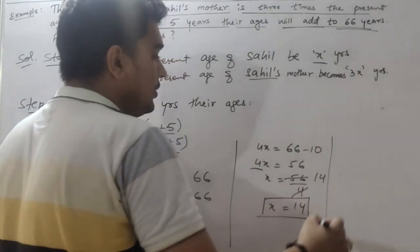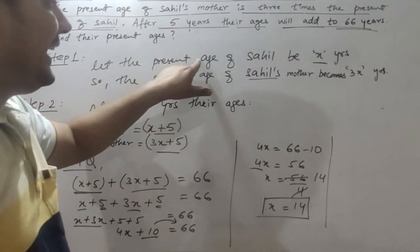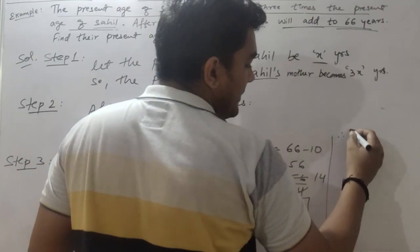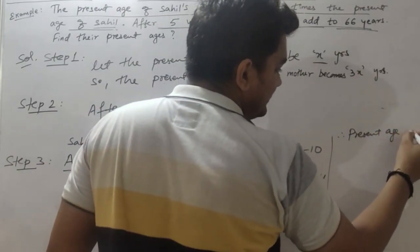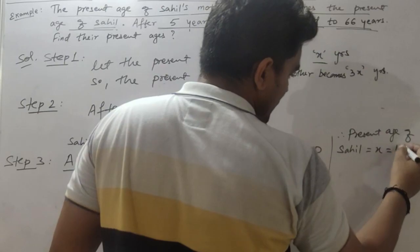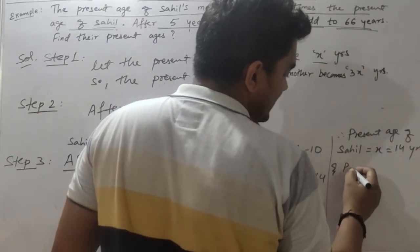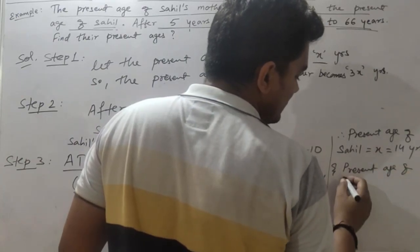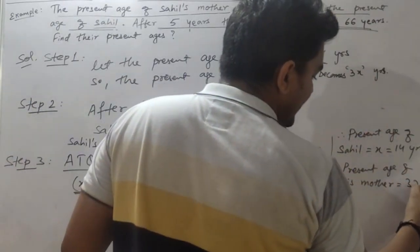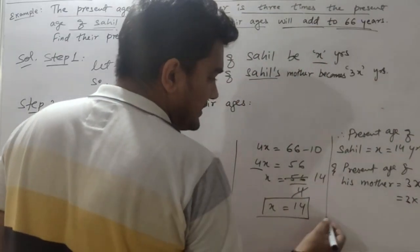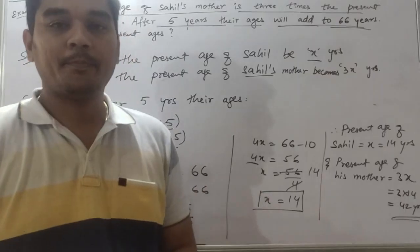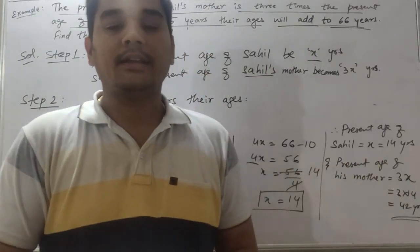After finding the value of the variable, go back to the question. We assumed the present age of Sahil is X, so the present age of Sahil equals X equals 14 years. The present age of his mother is 3X, which is 3 into 14, equals 42 years. This is how we solve word problems related to ages.